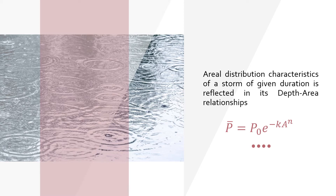For North India, we analyze the severest storms. In 1975, an equation was developed: P̄ = P₀ · e^(−k · A^n), where k and n are constants, and P̄ is the average precipitation depth.